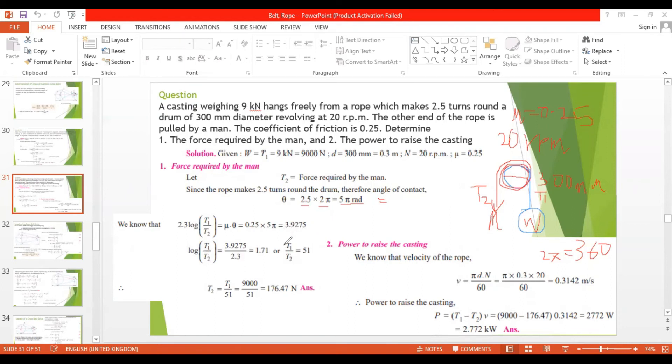So if you find the ratio, you can directly put it in the equation. T2 equals T1 by 51, because T1 by T2 is 51. The value of T1 is 9000, so when you substitute T1 here, you will have T2 equals 9000 by 51, that is equal to 176.47 newtons. This is the force required by man to hold this one without moving.